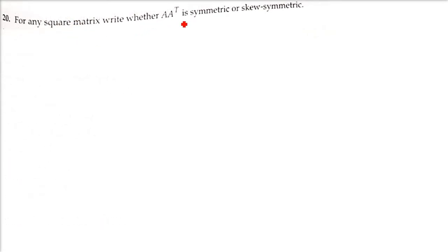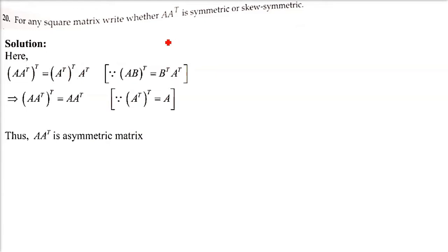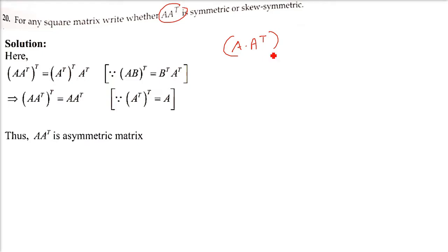Next question: for any square matrix, write whether A times A transpose is symmetric or skew-symmetric. We need to determine the nature of the matrix A·Aᵀ.